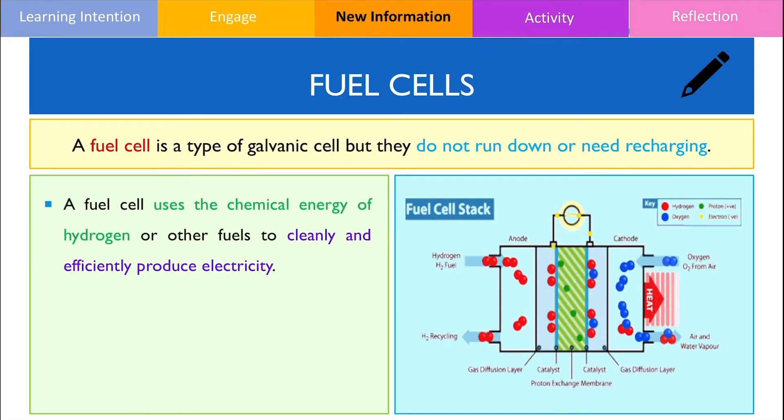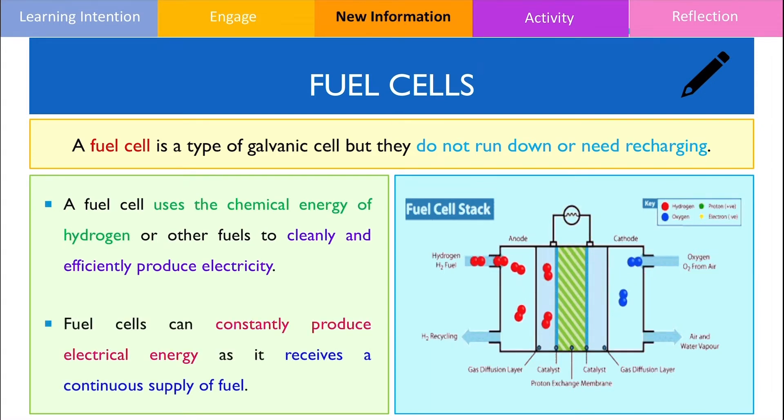Depending on the type of fuel cell, it will use the chemical energy stored in the bonds of fuels such as hydrogen to cleanly and efficiently produce electricity compared to thermal power stations that use fossil fuels. The reason why it can constantly generate electricity is because it receives a continuous supply of fuel which is illustrated in the diagram below where you can see a constant amount of hydrogen and oxygen that's being pumped into the fuel cell to take part of the redox reaction.